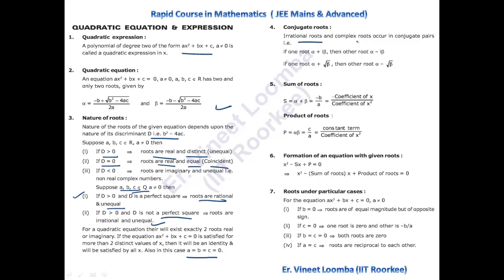Irrational roots and complex roots in a quadratic equation always occur in conjugate pairs. If (α + iβ) is one root, then (α − iβ) is the other. Similarly, if one irrational root is (α + √β), the other is (α − √β). The sum of roots is −b/a and the product of roots is c/a — formulas we studied in class 10.